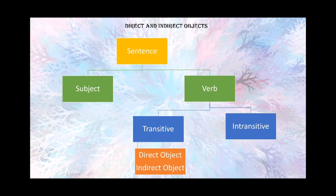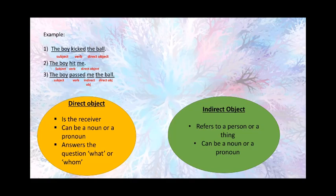Now let's understand what are direct and indirect objects. The direct object refers to a person or a thing that is affected by the subject's action. For example, we have the first sentence.